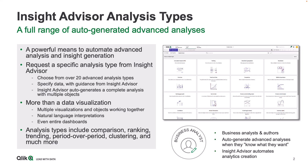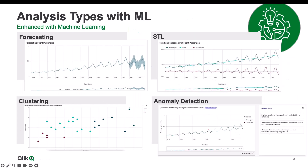We are continuing to roll out more and more of these analysis types. We are now up to 21 available options, and what we've started to do is leverage machine learning services in our latest analysis type offerings. The first example is forecasting. Qlik Sense supports multiple engine functions used to calculate a forecast, and we have automated the creation of a forecast by creating an analysis type. As long as the data model contains historical time-based data, we can predict future events.